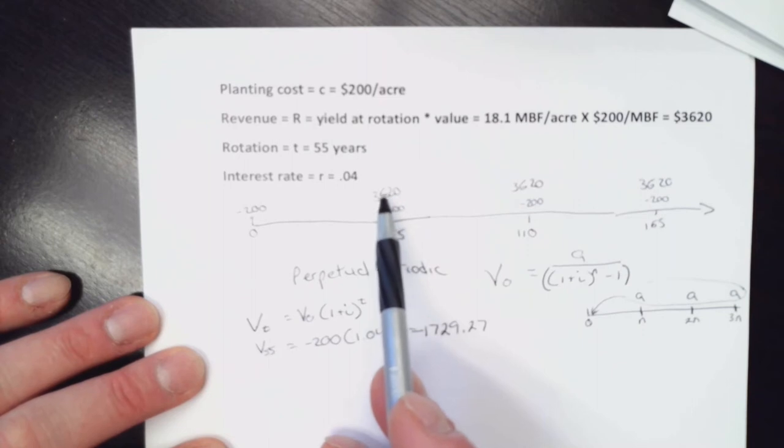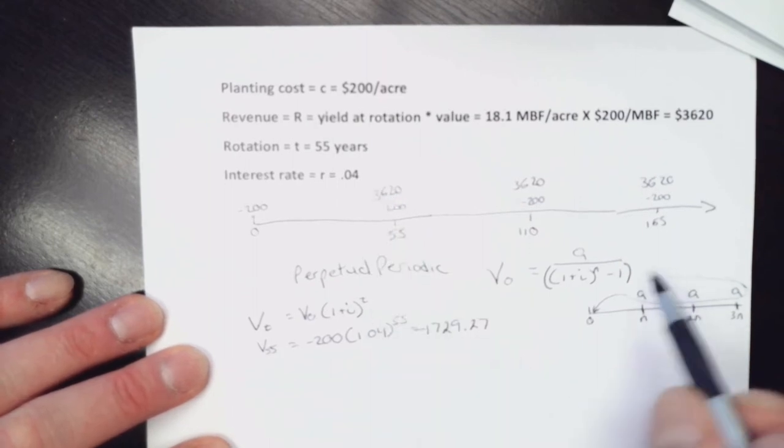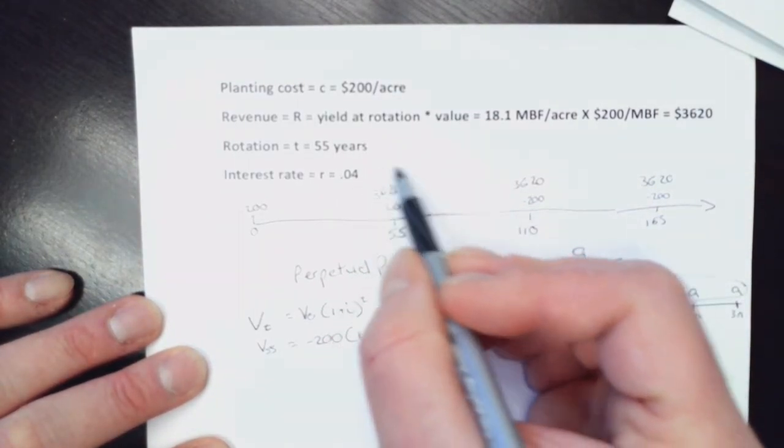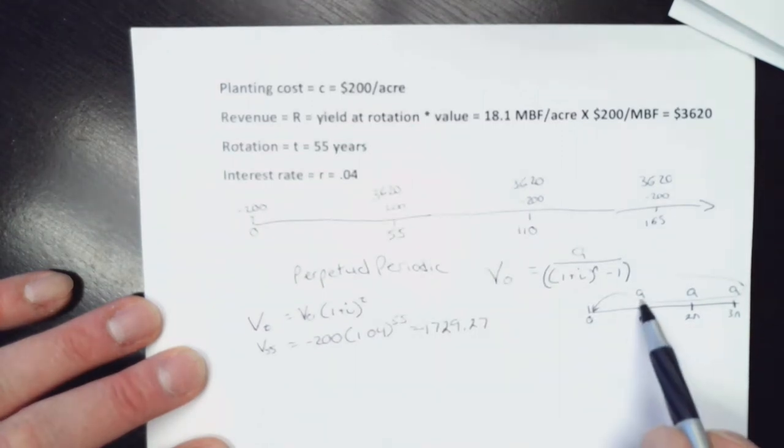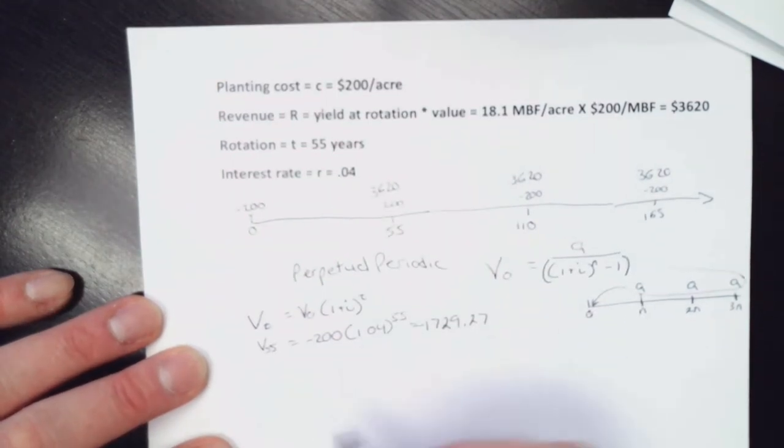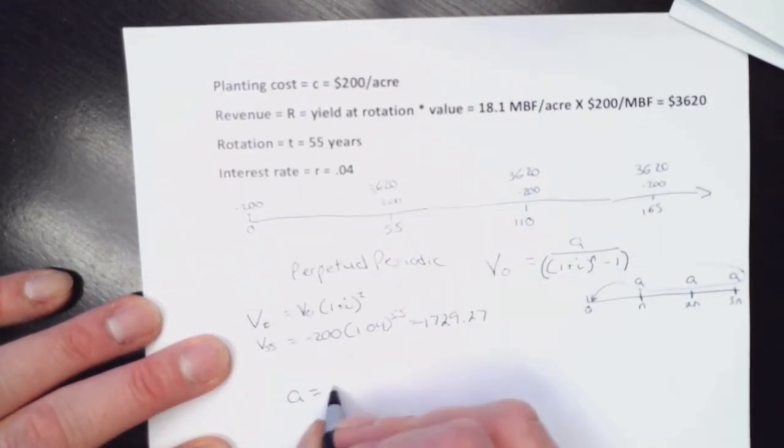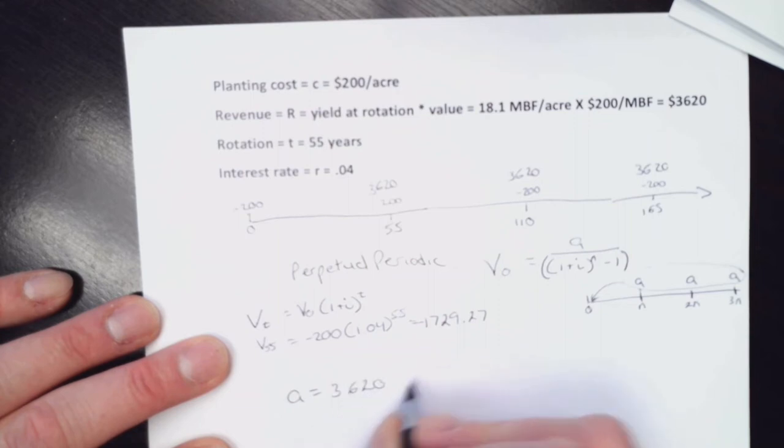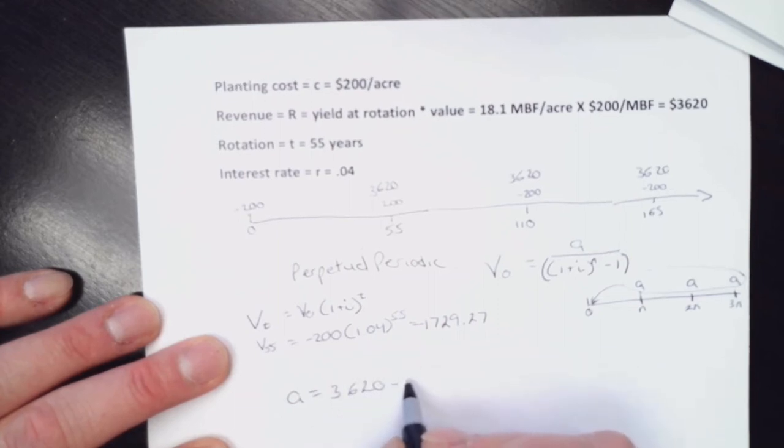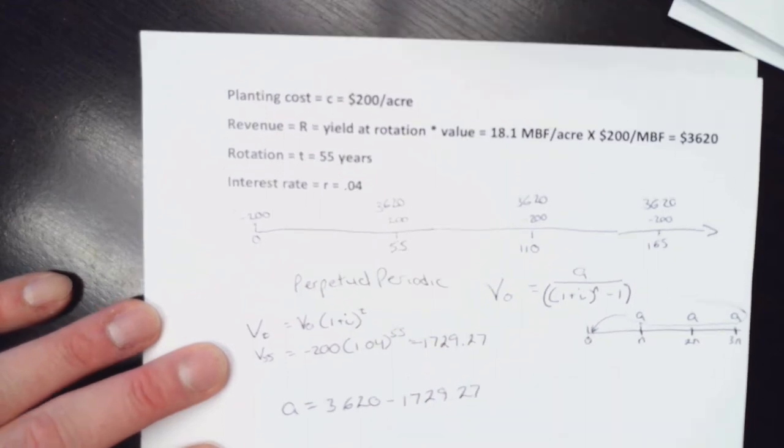So we got this minus $1,729 that we figured out. That's taking this value out here. And so now we have two values that we can look at at a single point in time that become our A. And so our A, so now we're going to identify the known values. Our A is going to be the two values out here, $3,620 and then our minus $1,729.27.